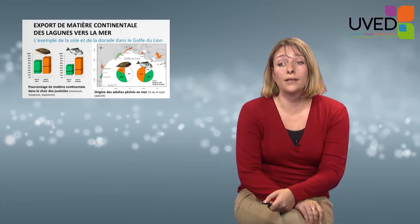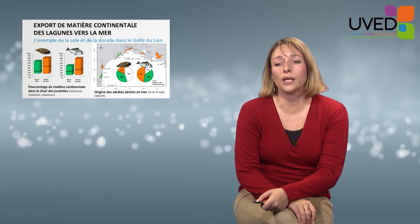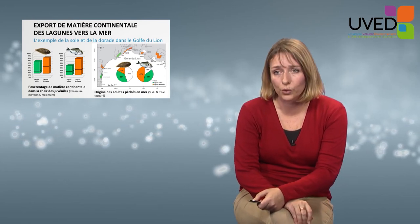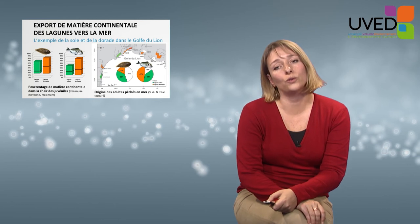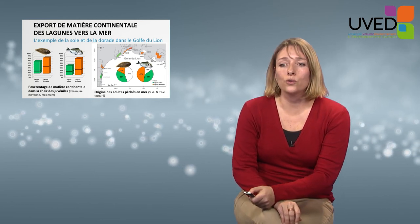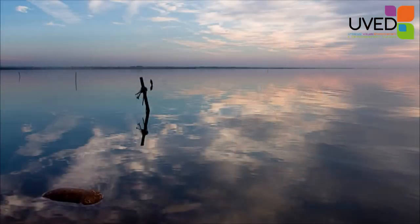Without those fishes, the organic matter would be trapped in the coastal lagoons. Those results are being confirmed for other lagoons in other environments and with other species in tropical areas and in temperate areas as well. What matters here is that we should not ignore the importance of the role played by lagoons in coastal productivity and the carbon cycle, especially transfers of carbon and organic matter between the continent and the sea.